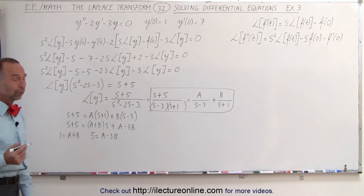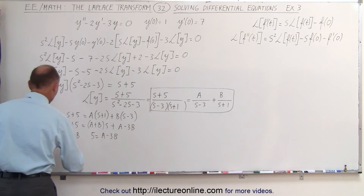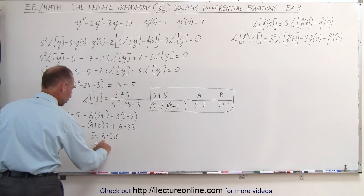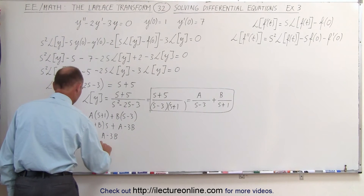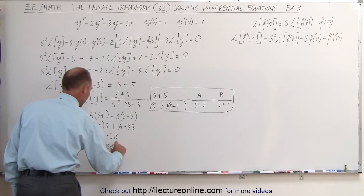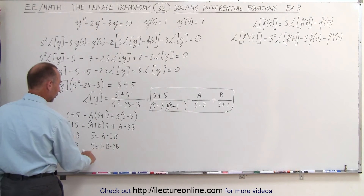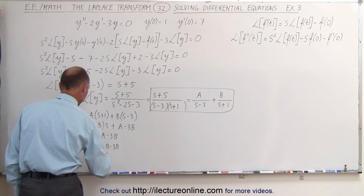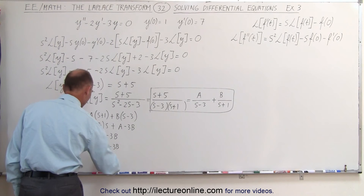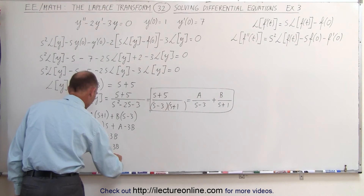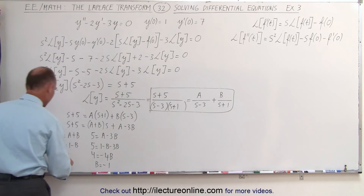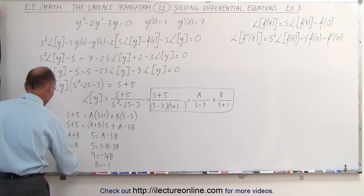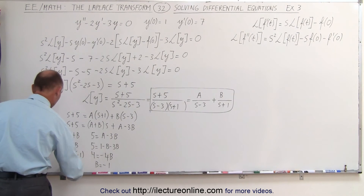So here we have two equations, two unknowns. We're going to solve for one of them. We can say a equals 1 minus b, and plug that in: 5 equals 1 minus b minus 3b. Bringing the 1 over and combining gives 4 equals minus 4b, which means b is equal to minus 1. And if b equals minus 1, then a equals 1 minus (minus 1), so a equals 2.